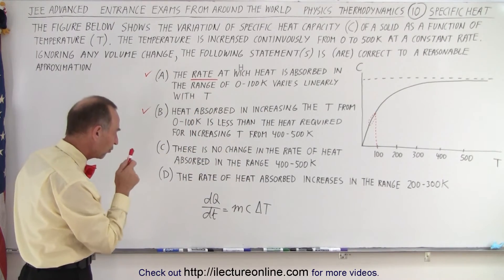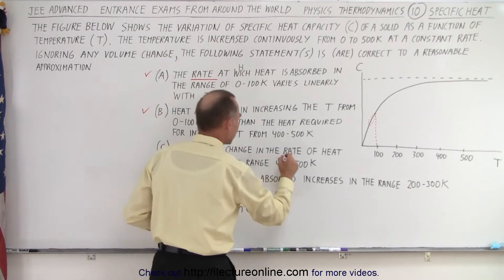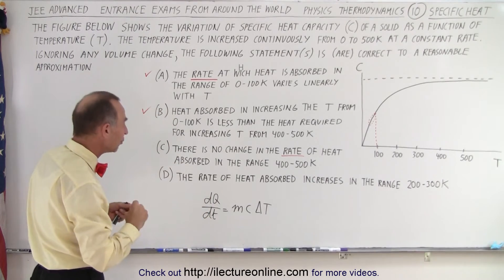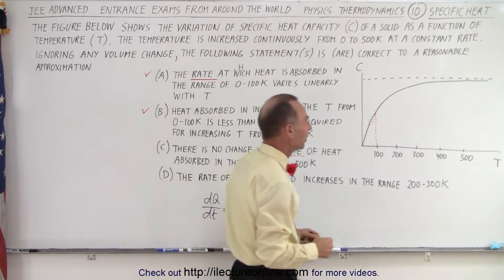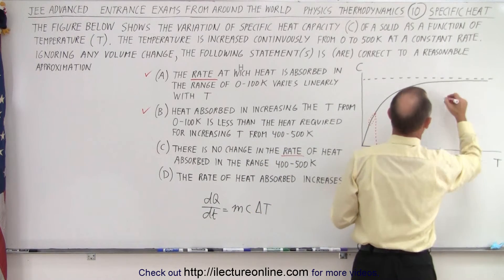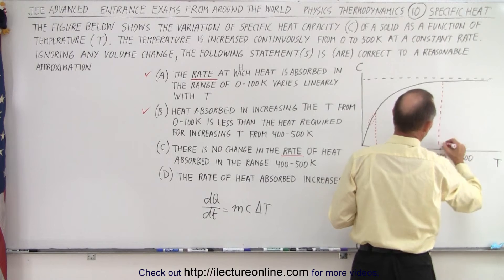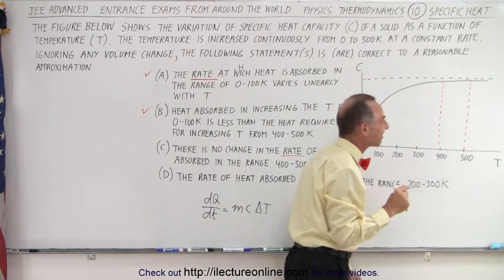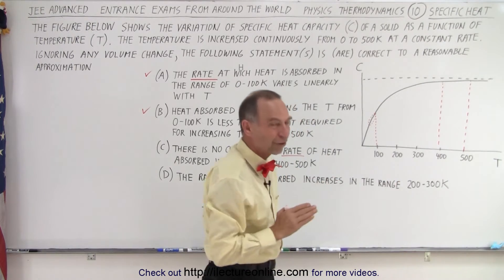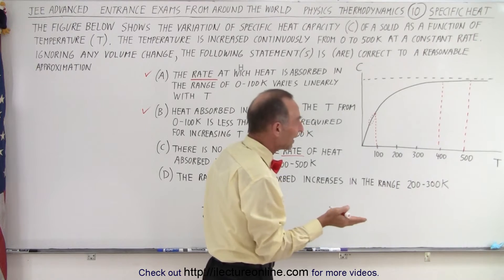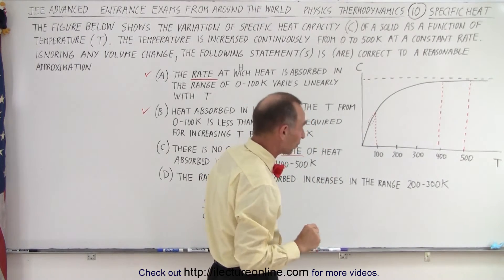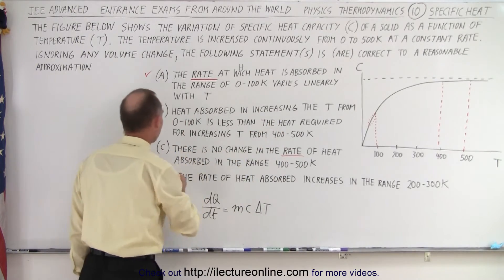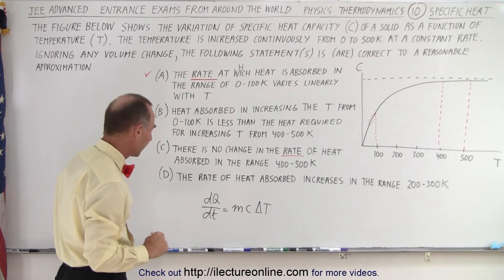For C, it says there is no change in the rate of heat absorbed. It's again, to talk about the rate, the DQDT, the rate of the heat absorbed in the range from 400 to 500 K. So, the question again is, is this a linear function or is this a non-linear function? So, let's go ahead and find out what these two points are. And again, you can notice that there's that slight, slight non-zero slope. But is it close enough to zero? Again, I think in the actual picture, it's very, very close to zero slope. If it's zero slope, that means there is no change in the rate of heat absorbed. And so, that would be a correct answer.